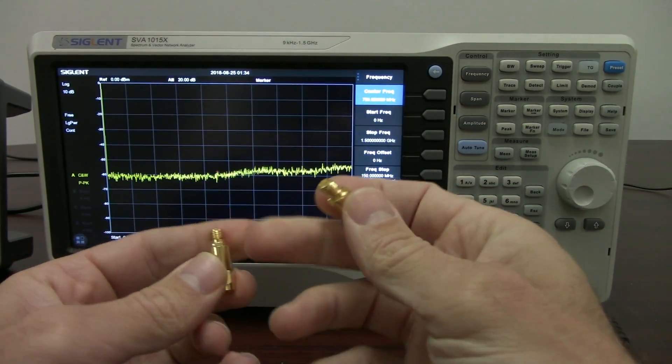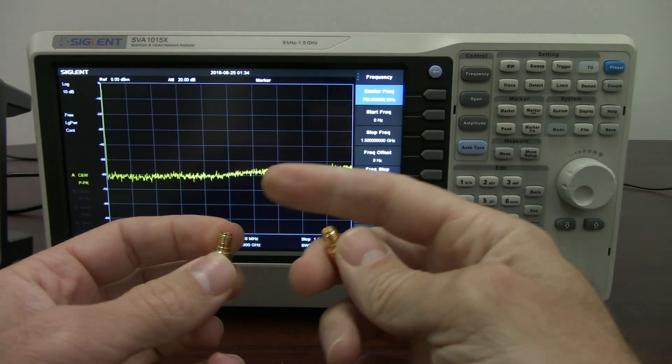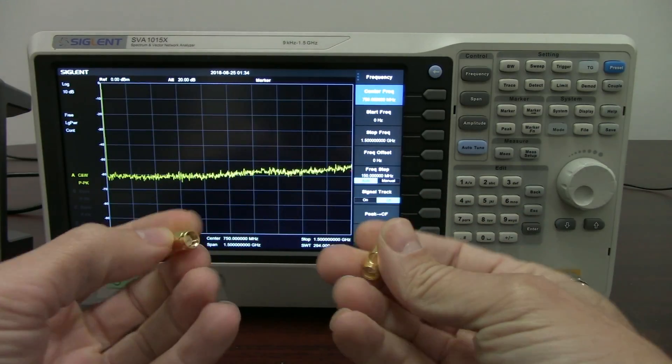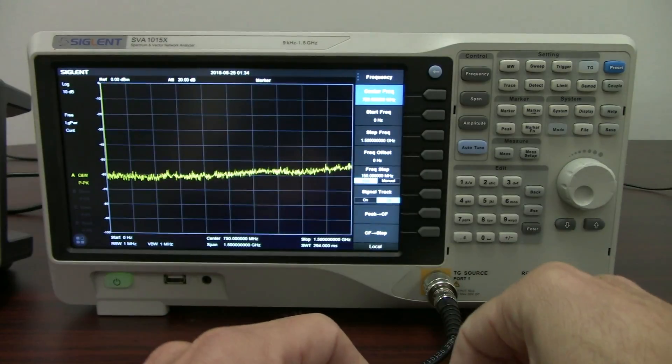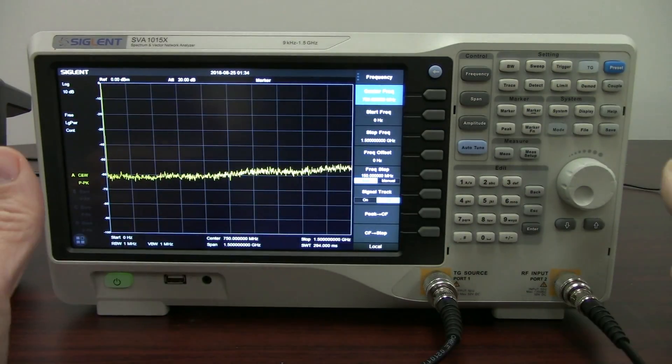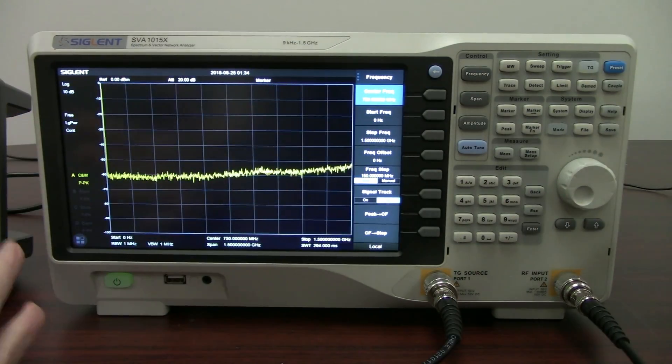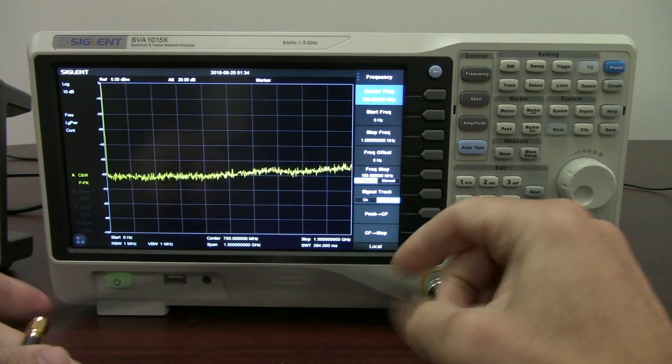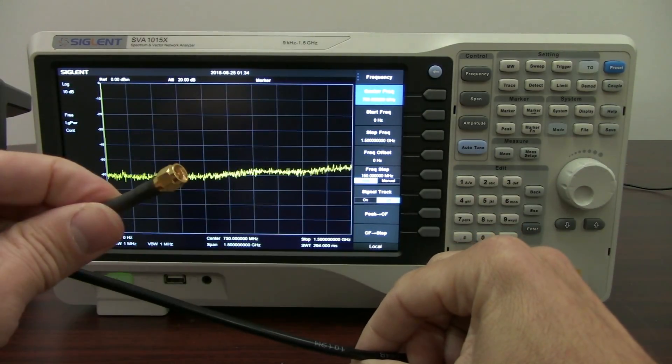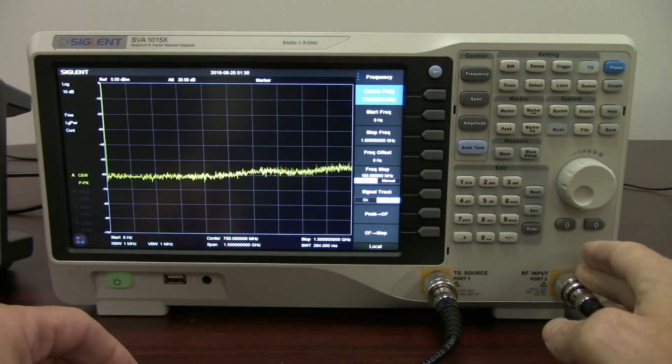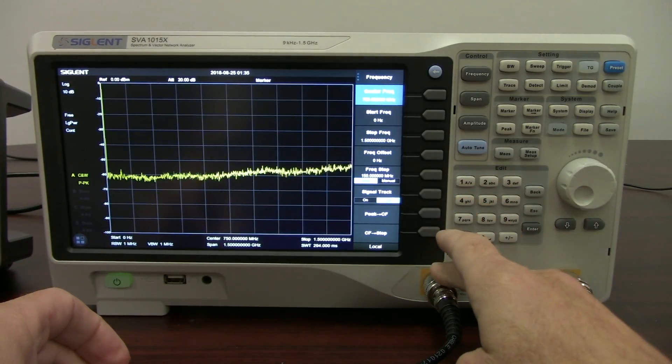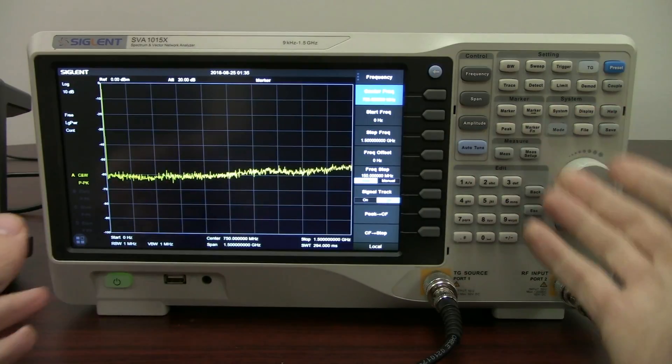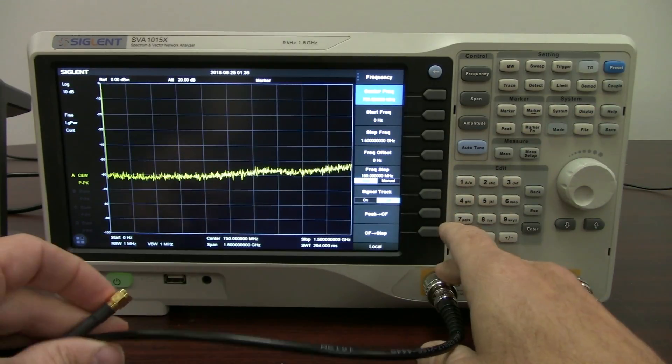These are 50 ohm, and they terminate with SMAs on either end, SMA female and SMA male. And so how we're going to do that, if you're not aware of the way that the spectrum analyzer works, we've got a tracking generator output here connected to an adapter and a cable that terminates in an SMA. And then we have an RF input over here.